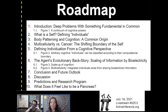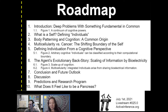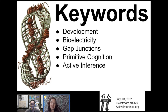The roadmap of the paper: we're going to go through the introduction, then the paper is broken up into lots of different parts — what is a self, how do you define an individual, body patterning, cognition, multicellularity versus cancer, defining individuation from a cognitive perspective, the agent's evolutionary backstory, conclusion, future outlook, discussion, and then some predictions and research program. And then in the end, what does it feel like to be a pancreas.